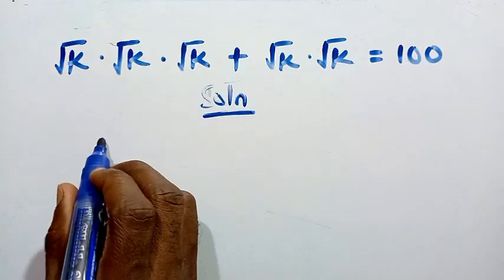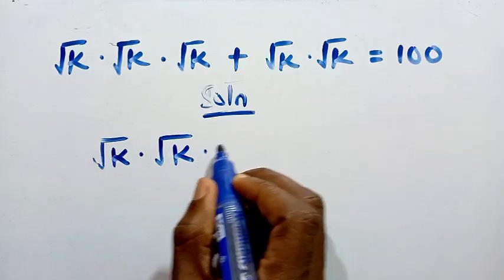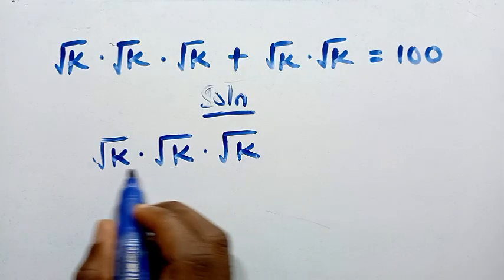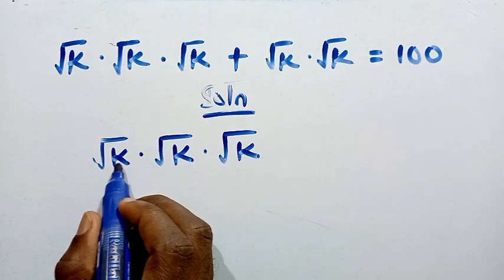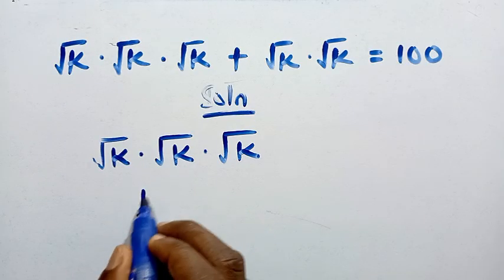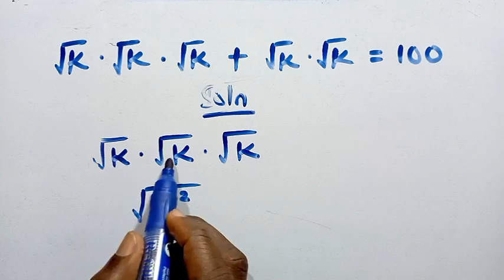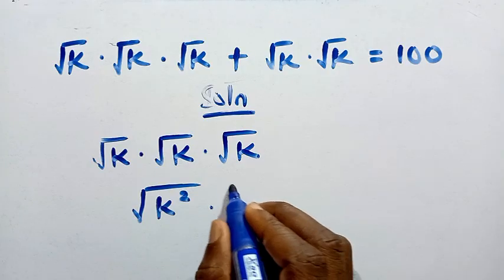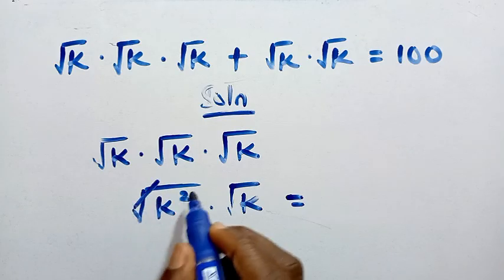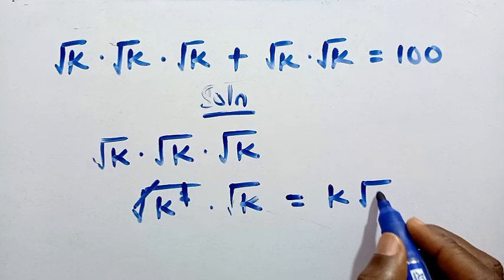When we look at the first part, we are given √k × √k × √k. When we multiply √k by √k, we get √(k²). We then multiply by the remaining √k. The square root and square cancel, giving us k × √k, that is k√k.